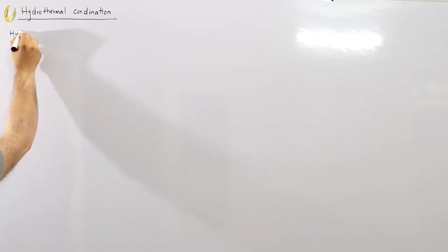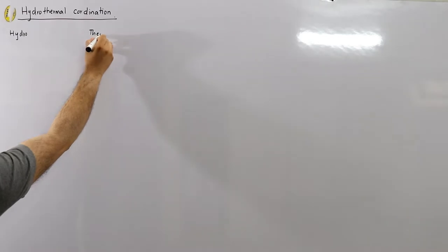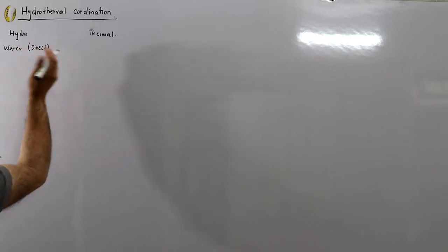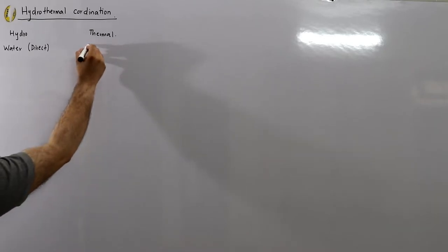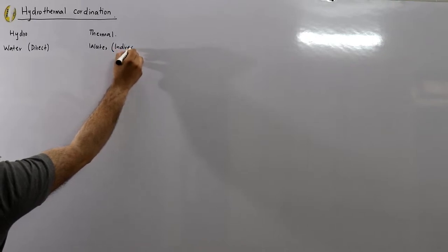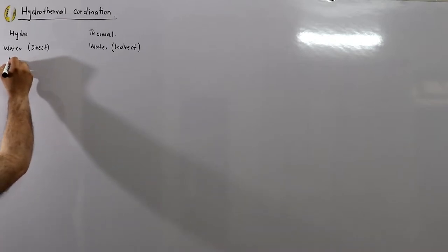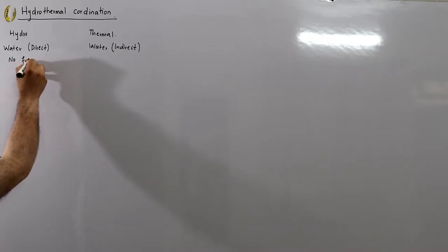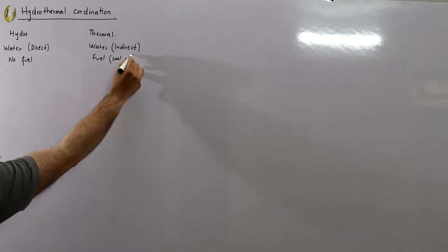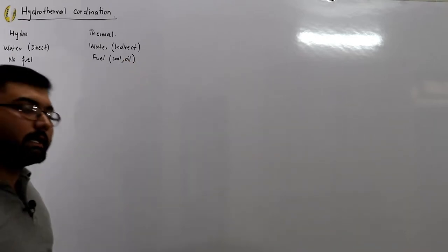In the hydro plant, water usage is direct — the hydro energy of the water is utilized. In the thermal plant, water usage is indirect: it is first converted into steam, and then the steam does useful work. There is no fuel required in hydro, whereas in thermal you must use fuel in the form of coal or kerosene oil, such as high-speed diesel.